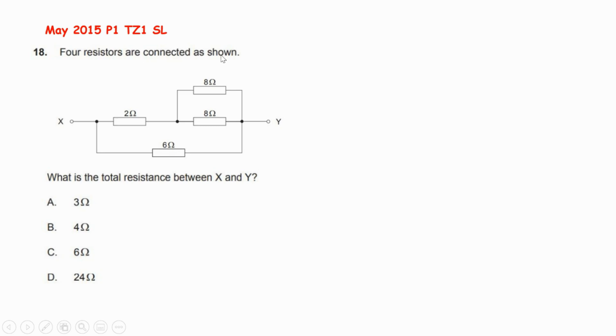All resistors are connected as shown between X and Y. We have 2Ω, 6Ω, 8Ω, and 8Ω. What is the total resistance between X and Y? Okay, step one: you have to simplify the diagram. The 8Ω and 8Ω are connected in parallel.